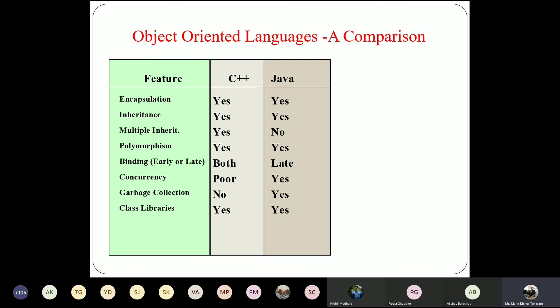This is the object-oriented language comparison between C++ and Java, covering encapsulation, inheritance, multiple inheritance, polymorphism, binding, concurrency, garbage collection, and class libraries. All these features are included inside Java. We will stop here today and continue with the remaining topics tomorrow.